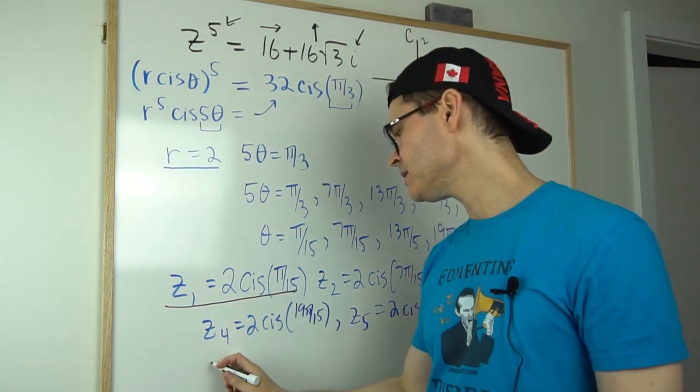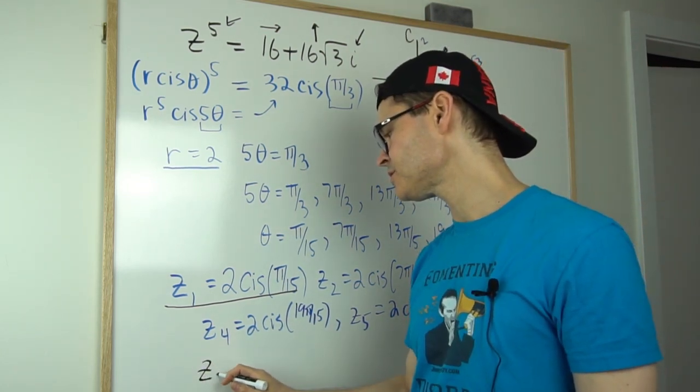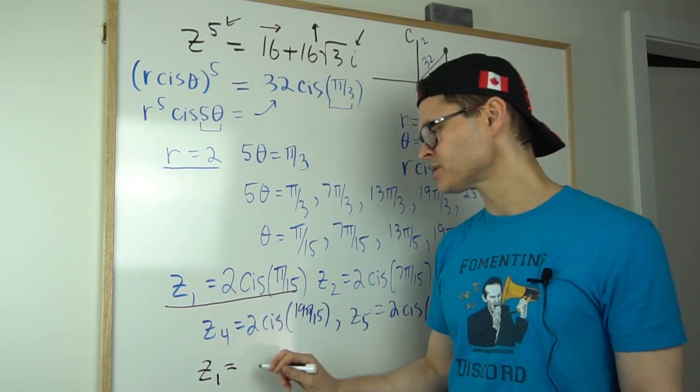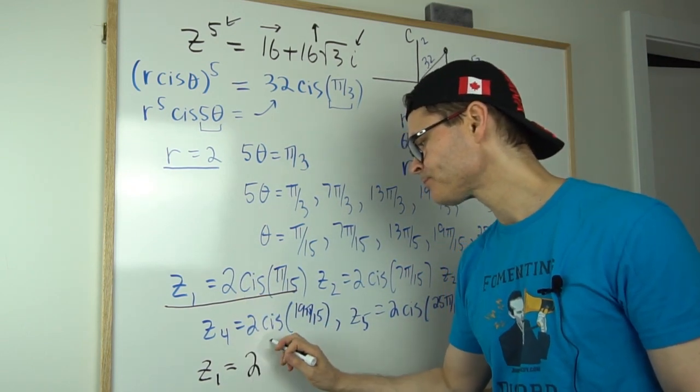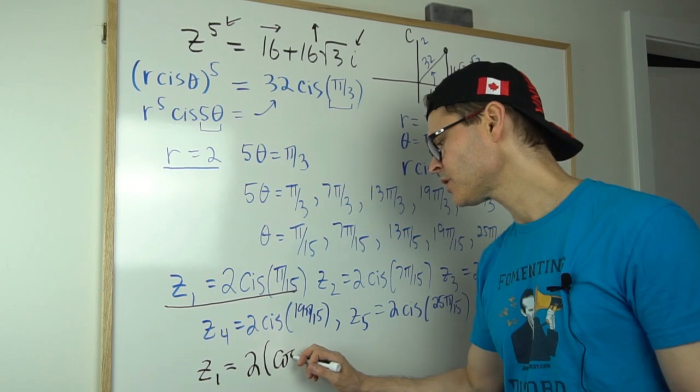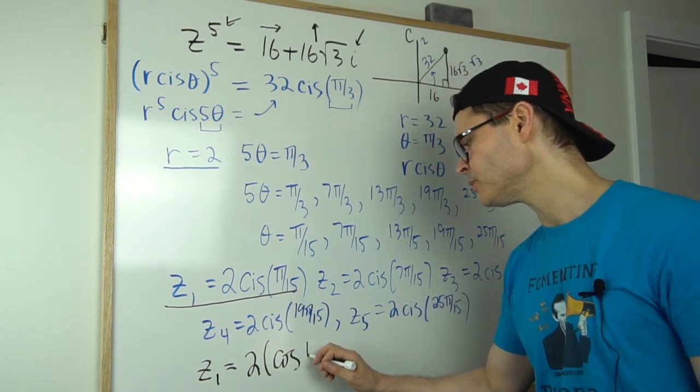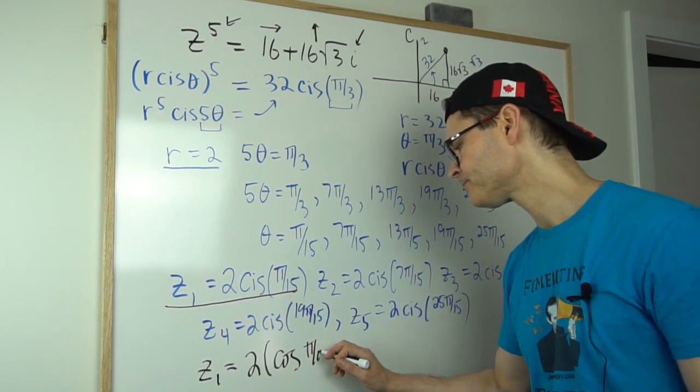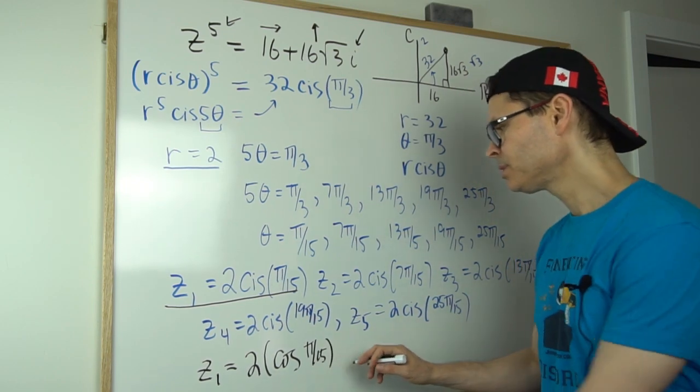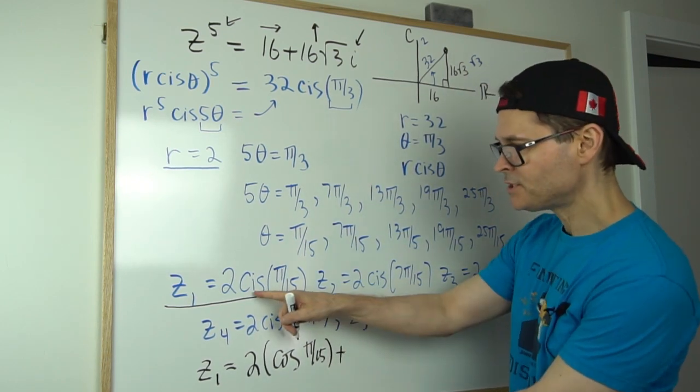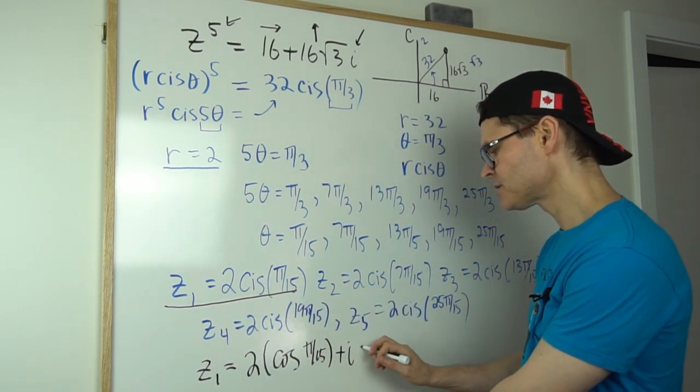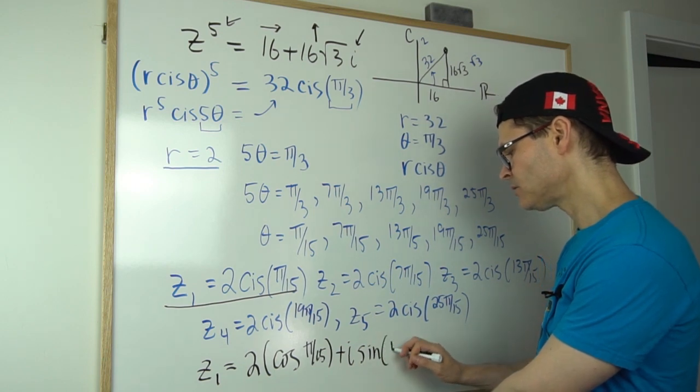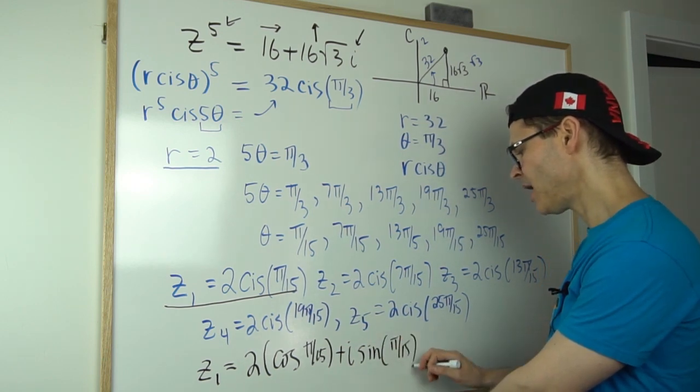What you do is you take this is the first answer. You simply recognize that C represents the cosine. So 2 times the cosine of the argument, which is π by 15, plus the imaginary number i times the sine of π over 15.